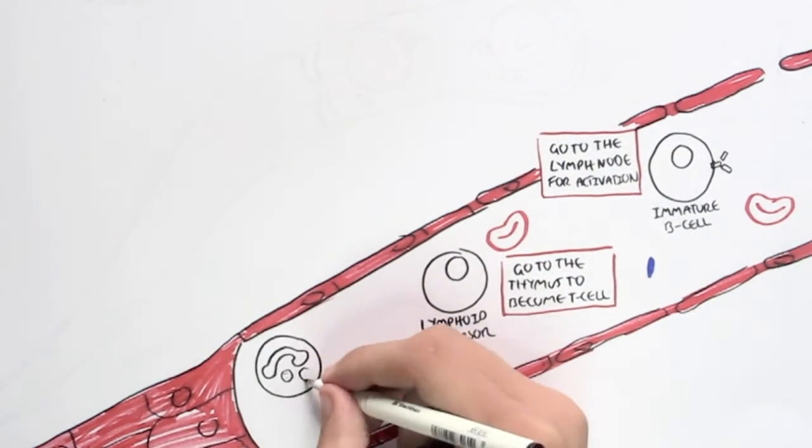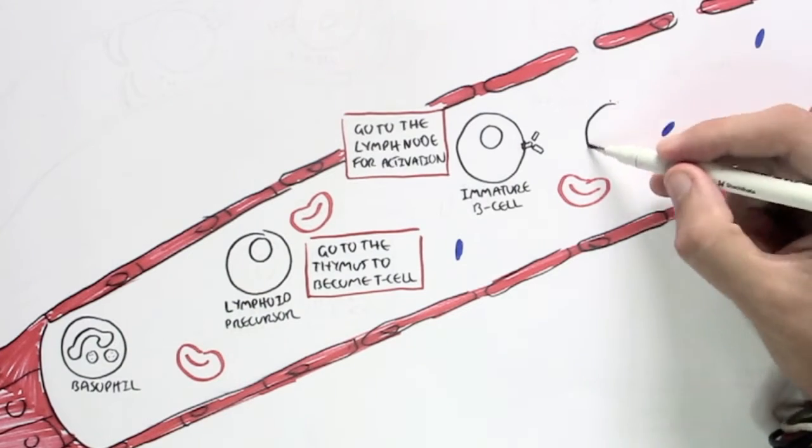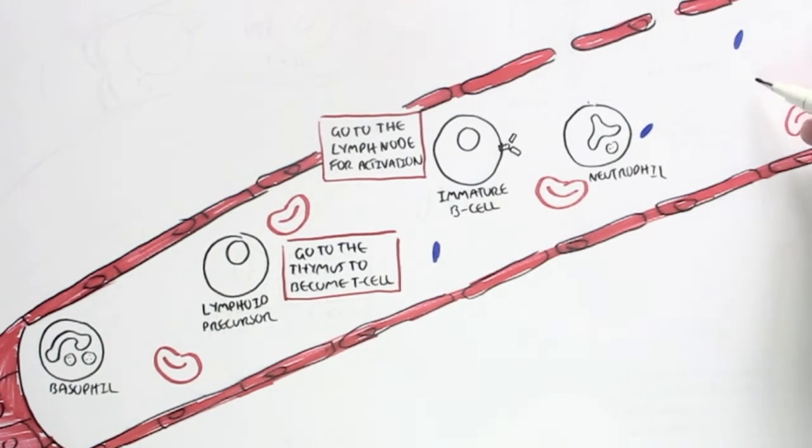And then circulating around the bloodstream, we also have basophils, neutrophils, and eosinophils, which are the granulocytes, and they will just circulate around.